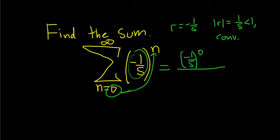Always, every time, you just take whatever is here and put it there, and that goes up top. Then on the bottom, it's always 1 minus r. And r is negative 1/5.